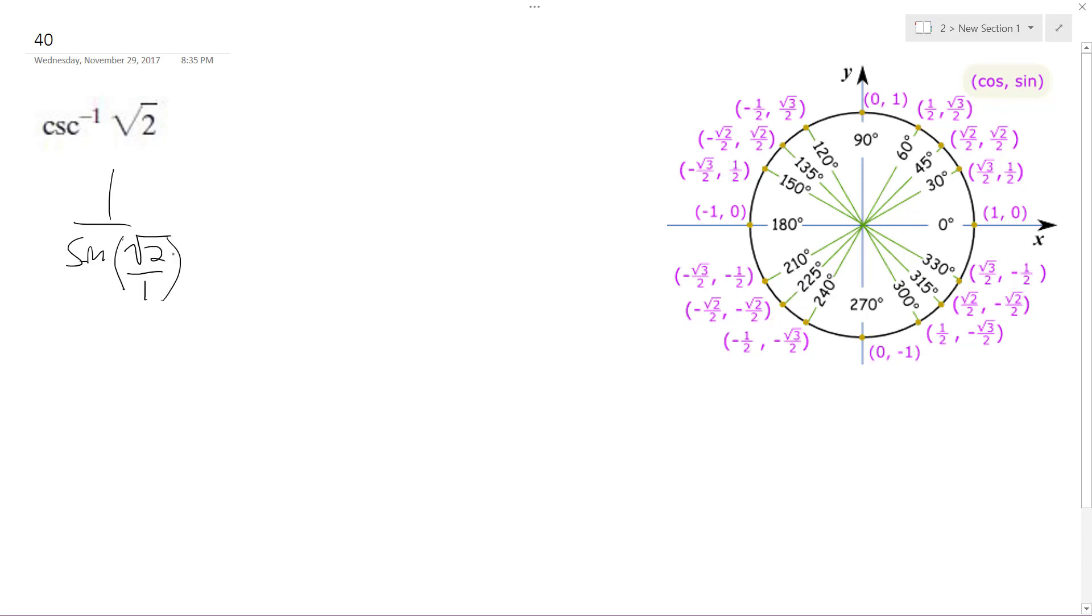Or square root of two over something. You could think of it like square root of two over one. So it only takes place in one area, and that's going to be right here.